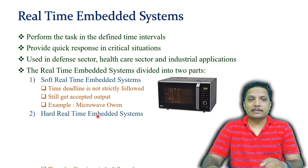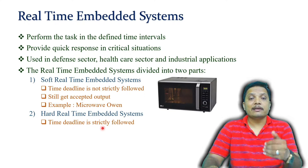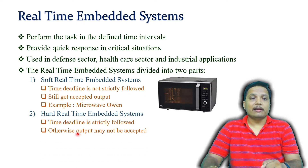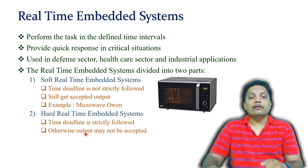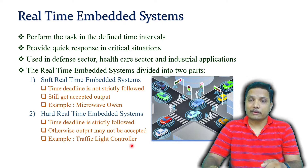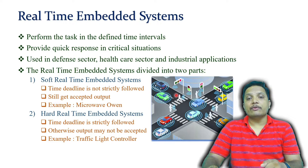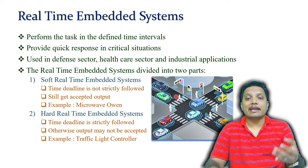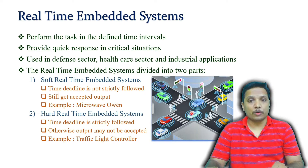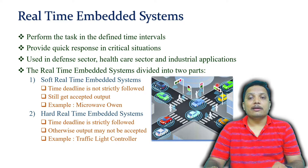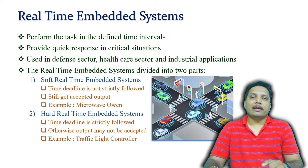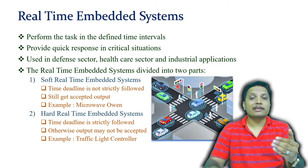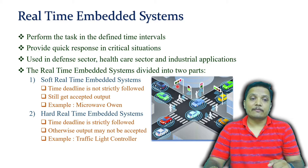In a hard real-time embedded system, the time deadline is strictly followed. If you don't follow the time deadline strictly, the output may not be accepted. For example, a traffic light controller — if you don't follow the time deadline strictly, there is a possibility of huge traffic or accidents. As shown here with the traffic signal, we have to follow timing with each and every second. This is an example of a hard real-time embedded system.